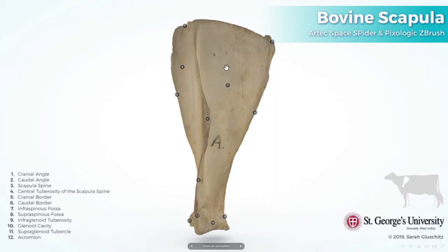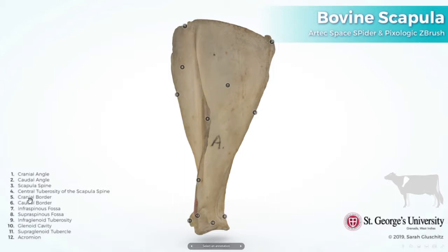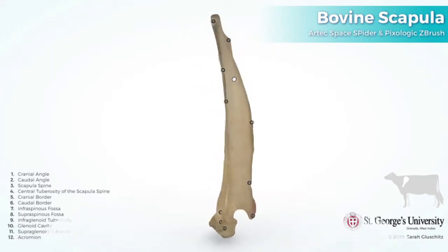Now, demonstration of the scapula bone on the 3D model. As discussed in my last lecture, there are two surfaces, three fossae, three angles, three borders, and a pair of tubercles and tuberosities present in the scapula bone. All the parts of the scapula are denoted by numbers.